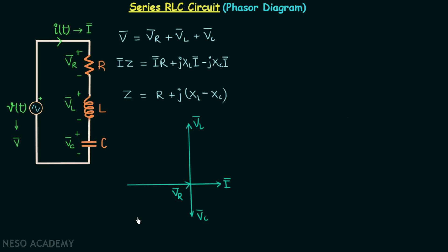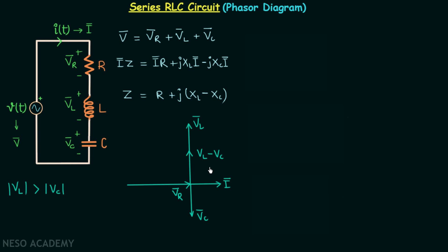While plotting VL phasor and VC phasor, I have assumed that the magnitude of VL — that is, the magnitude of voltage across the inductor — is greater than the magnitude of VC. Therefore the line for VL is drawn larger. The resultant of VL phasor and VC phasor will have the magnitude VL minus VC.